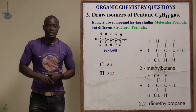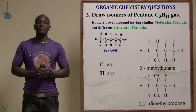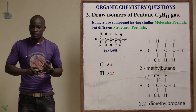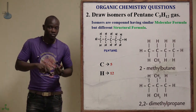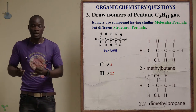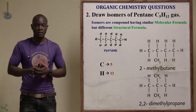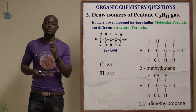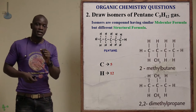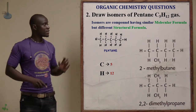The second question asks to draw the isomers of pentane, whereby pentane is C5H12. Remember, isomers are structures which have the same molecular formula but different structural formula. We need to draw the isomers of pentane, whose molecular formula is C5H12.